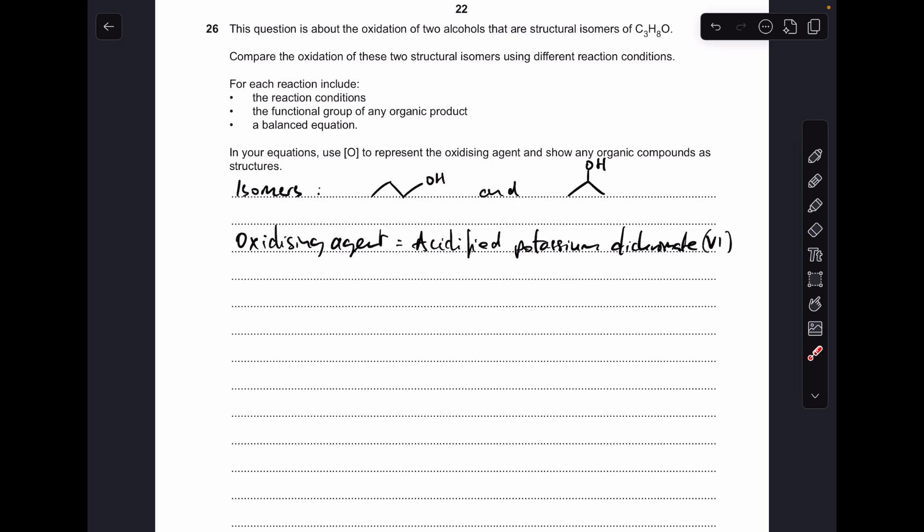Okay so we'll just start by saying what the isomers are. So propane-1-ol and propane-2-ol and the oxidizing agent is acidified potassium dichromate(VI).